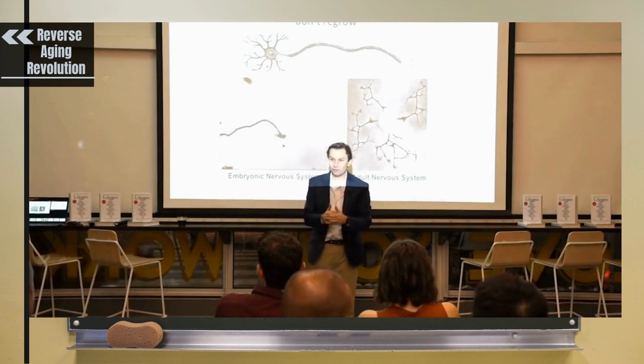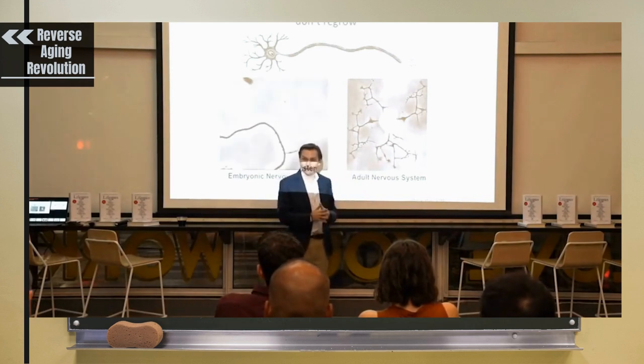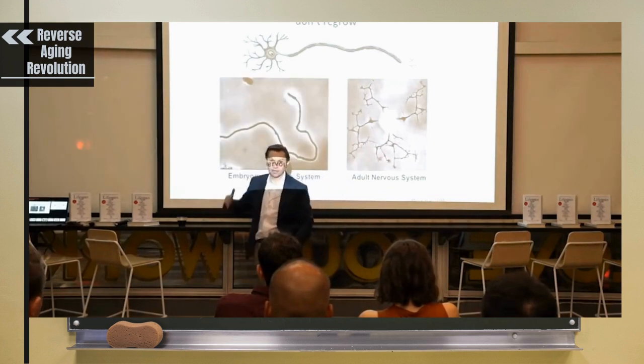So we thought, what if you could take adult nerve cells, damage them, or even just old nerve cells in the eye, and turn their age back to when they were young? Would they grow and function like they were young again? So how did we decide to do that?